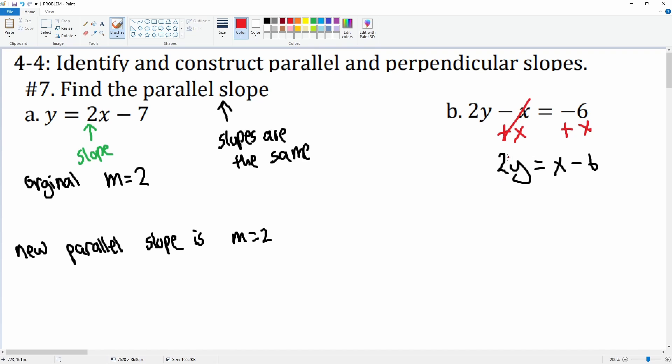That 2 is in front and it's attached by multiplication, so let's divide everything by 2. This leaves you with y equals—there's technically a 1 here—so 1/2 x minus 6 divided by 2 is 3.